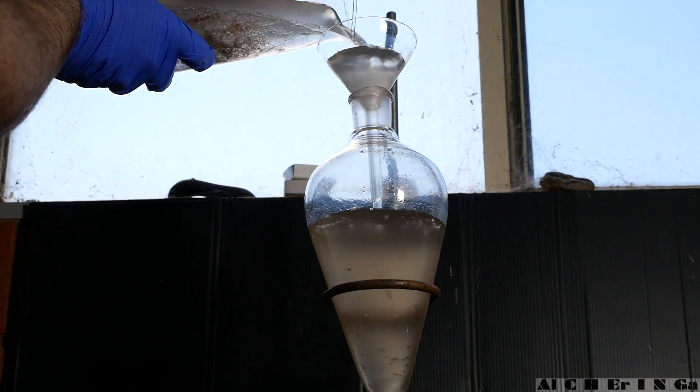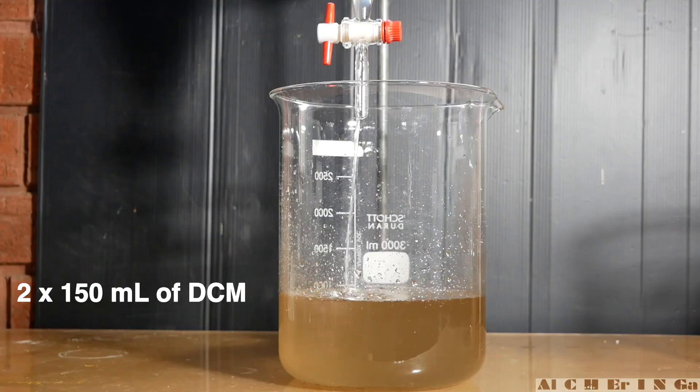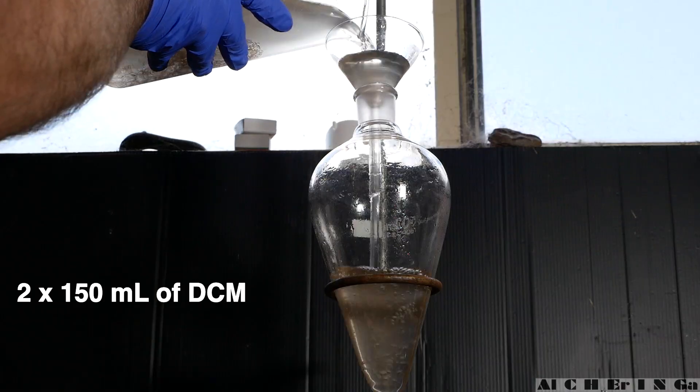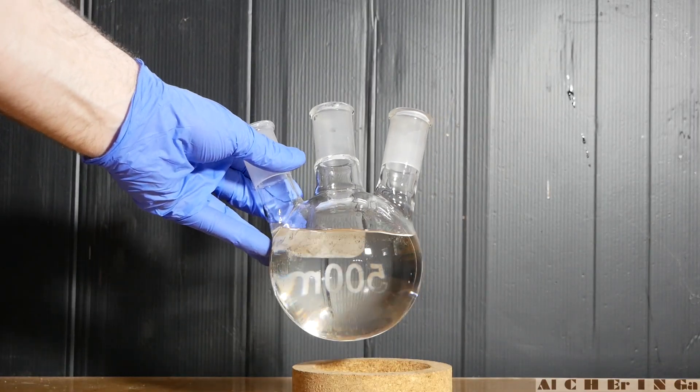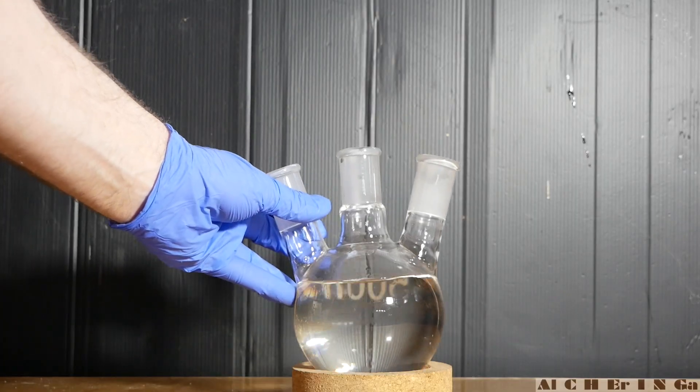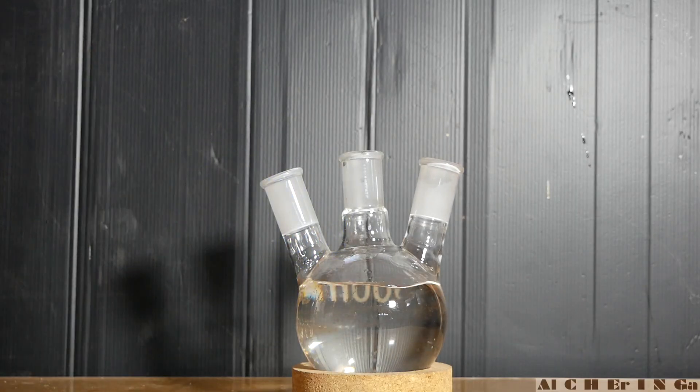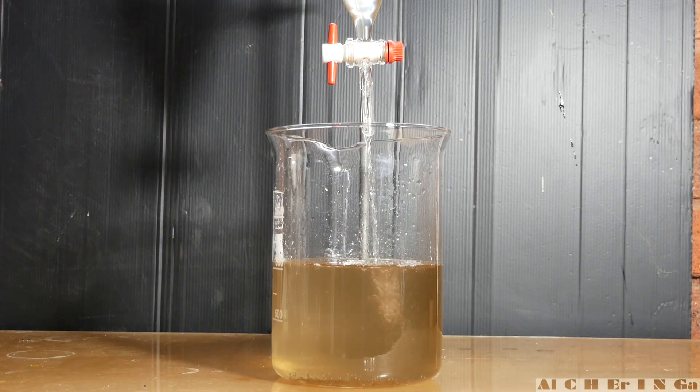Return the aqueous layer back and conduct another two more extractions with 150 milliliters of dichloromethane each. This is the cleaned lower dichloromethane layer that contains our product, 2-amino-1-phenyl-propane in free base form. Decant the remaining upper aqueous layer and discard it.